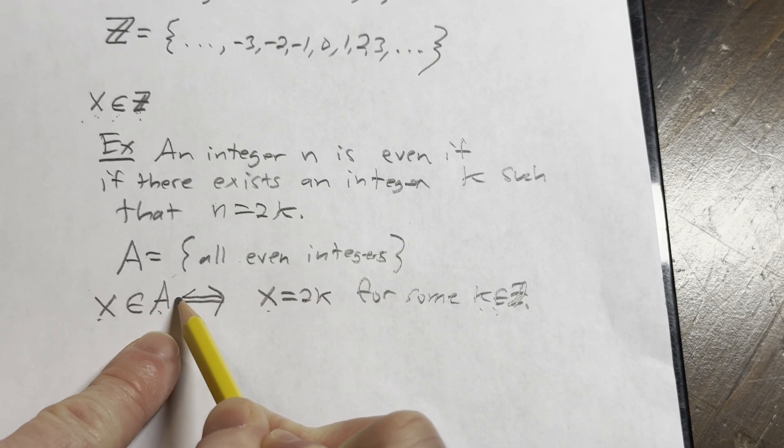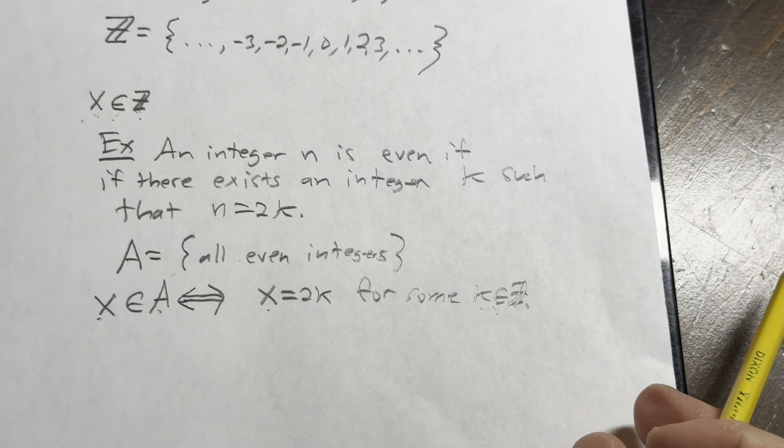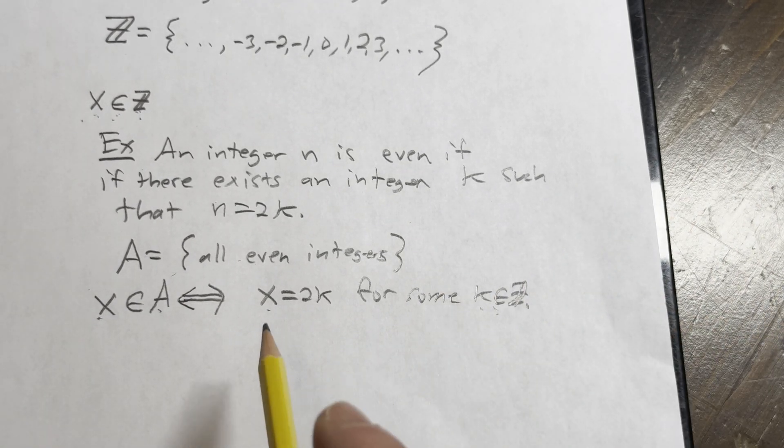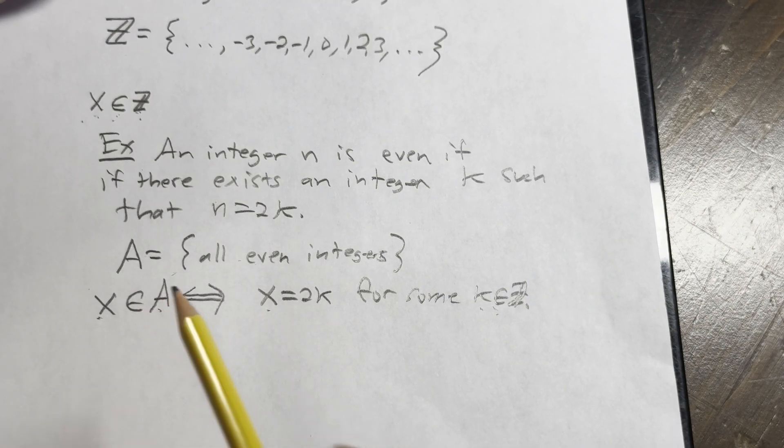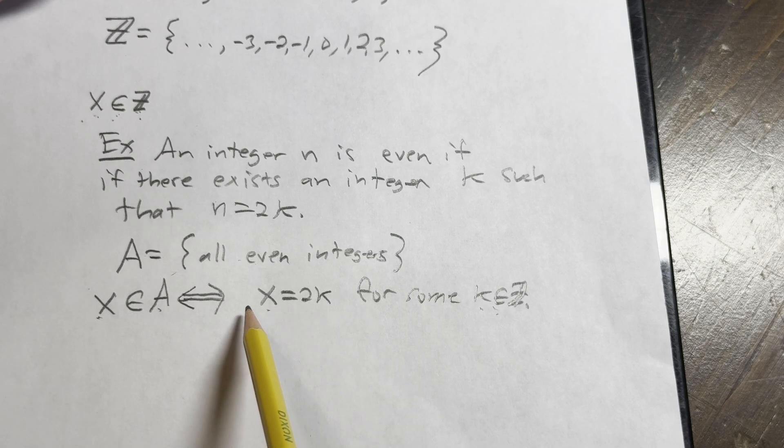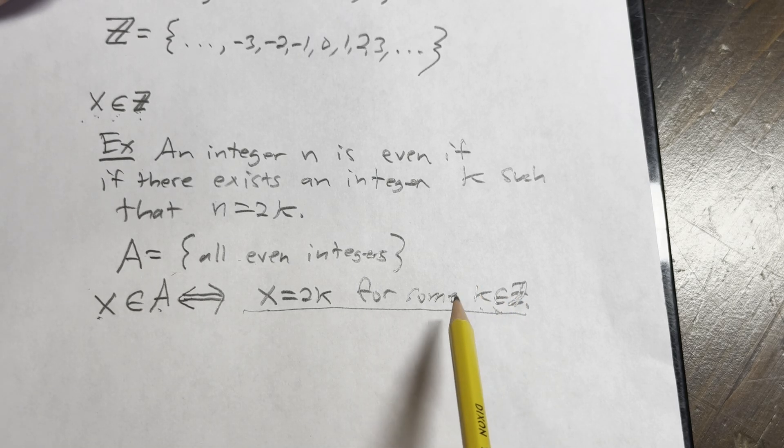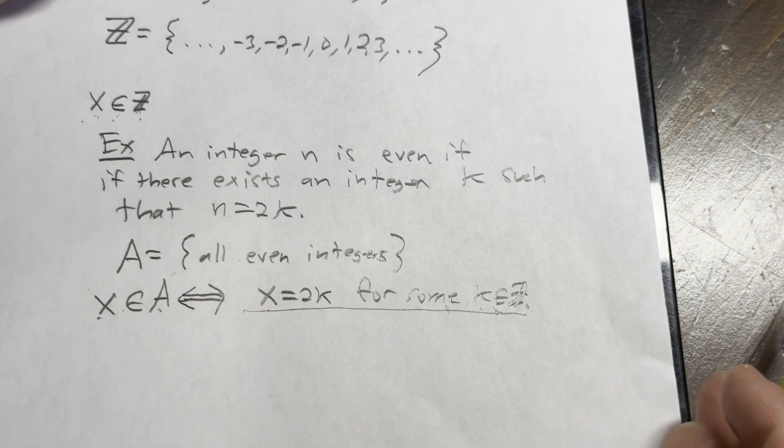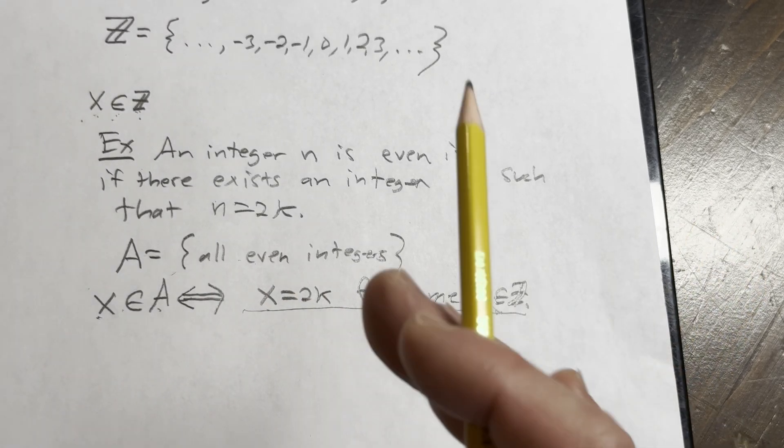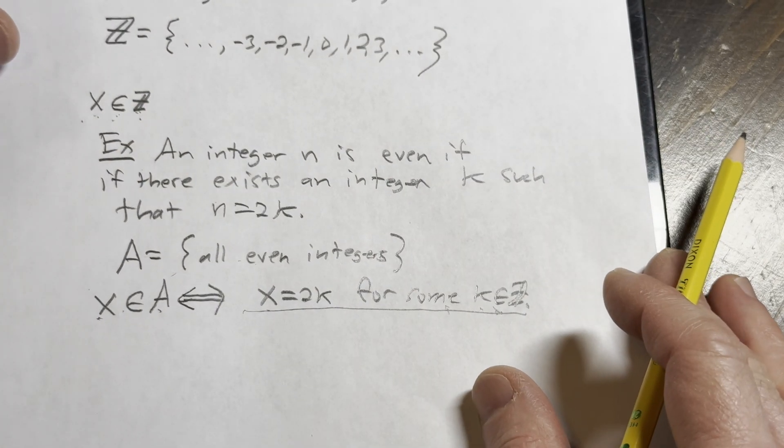By the way, this implication goes both ways, for those of you that are paying attention, or maybe already knew that. I just noticed, but it does go both ways. So this means x is even. What does it mean to be even? It means x is in A, because A is the set of all even integers. So that type of thing is very useful.